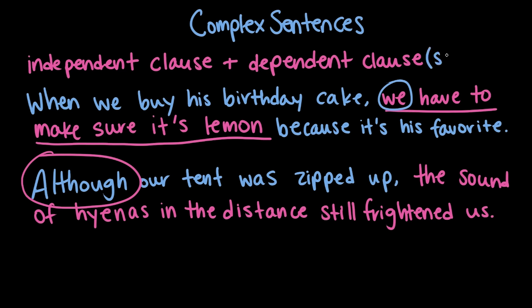So that's complex sentences: it's an independent clause that can be a sentence by itself, and one or more dependent clauses which can't be sentences by themselves, all put together in one big sentence. Does that sound right, Rosie? Sounds good to me, Paige. You can learn anything. Paige out. Rosie out.